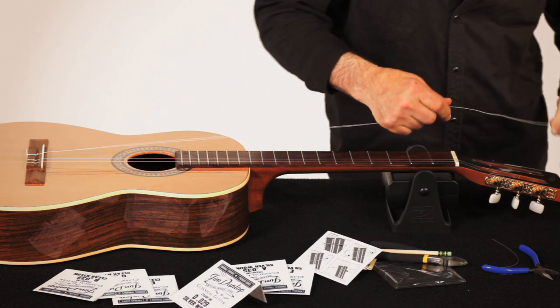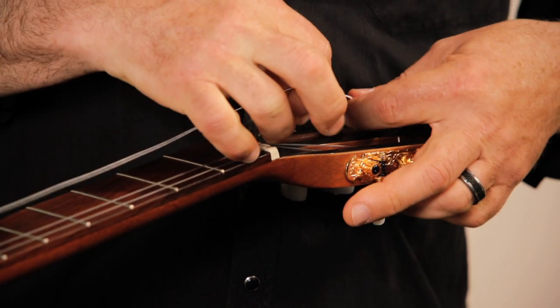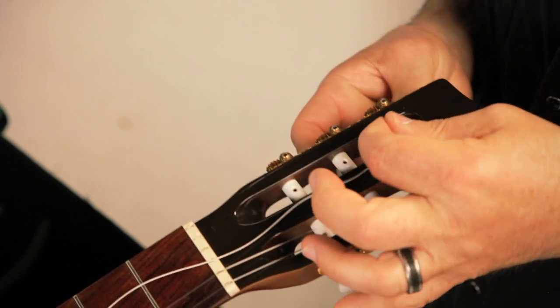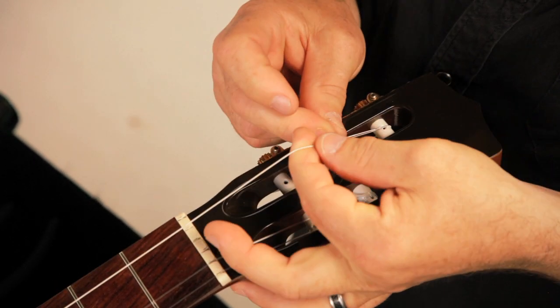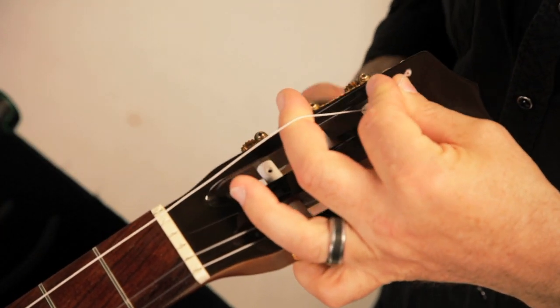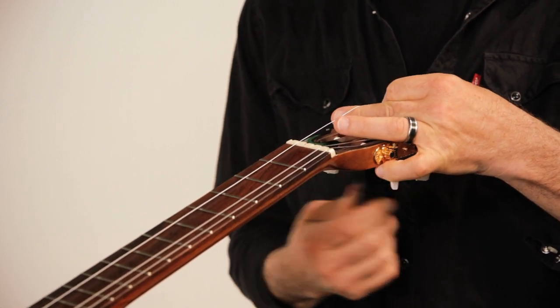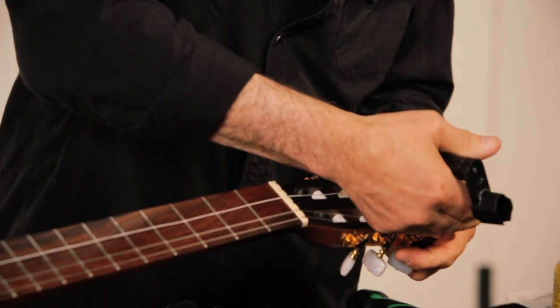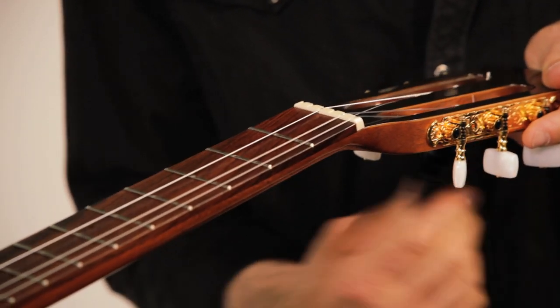Same thing, lube the nut. Go around the tuner. This is where it gets tricky. And again, just take the string and wrap around the tail. Wrap around once. Hold it up. I'll do this one the old-fashioned way. And just wrap it. I wrap the two center strings towards the center of the peg head, going in. And I wrap the middle strings going in. And then the outside strings I wrap out. And there you go.